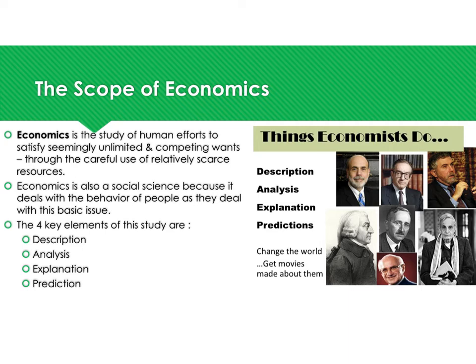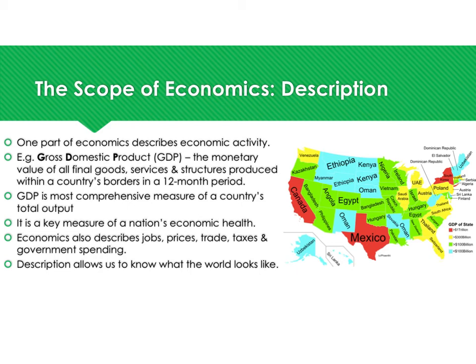The scope of economics: economics is the study of human effort to satisfy seemingly unlimited and competing wants through the careful use of relatively scarce resources. It is also a social science because it deals with human behavior. The four key elements of this study are description, analysis, explanation, and prediction. One part of economics describes economic activity such as GDP — gross domestic product — which is the monetary value of all final goods and services produced within a country's borders in a 12-month period, and the most comprehensive measure of a country's total output.